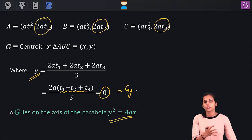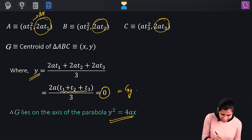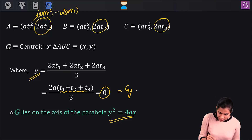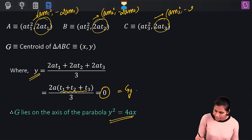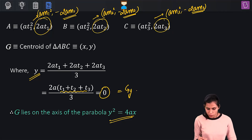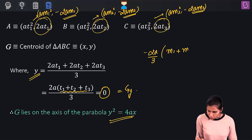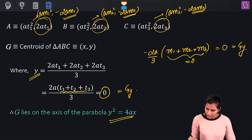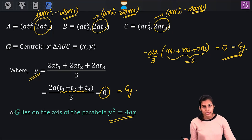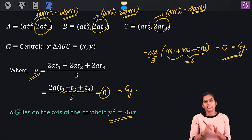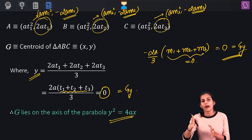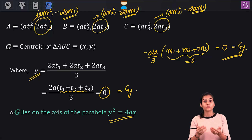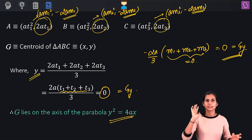Using slope-form coordinates: A = (am1², −2am1), B = (am2², −2am2), C = (am3², −2am3). The y-coordinate of G = (−2am1 − 2am2 − 2am3)/3 = (−2a/3)(m1 + m2 + m3) = 0, since m1 + m2 + m3 = 0. To summarize: the first property says the sum of y-coordinates of three co-normal points is always zero; the second property says their triangle's centroid always lies on the axis of the parabola.